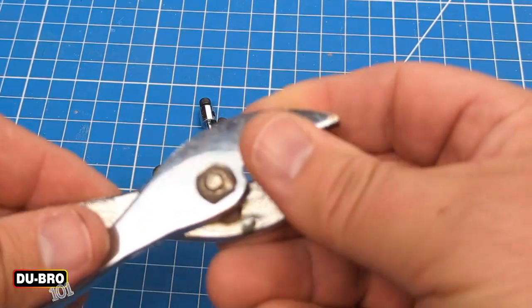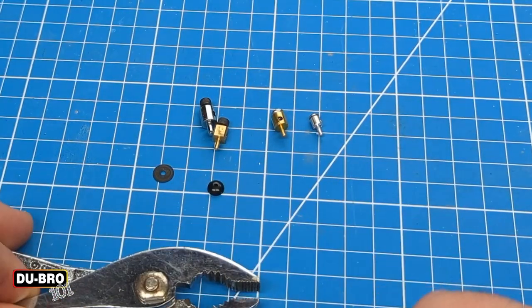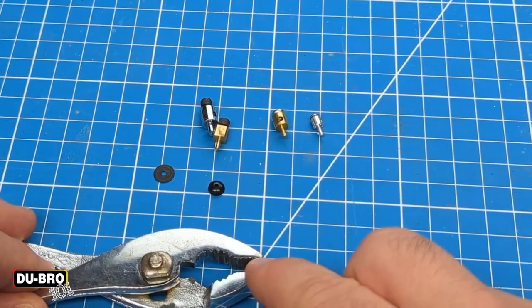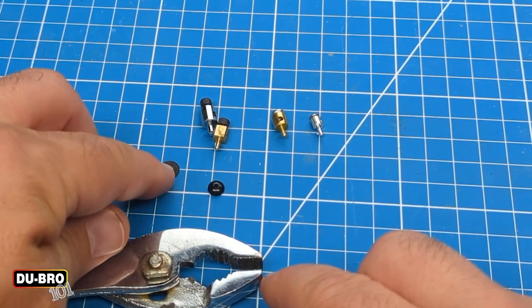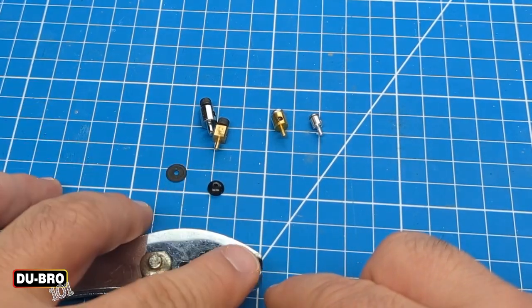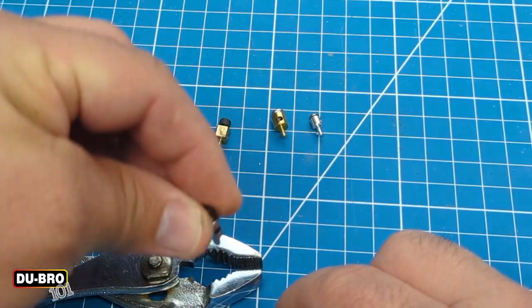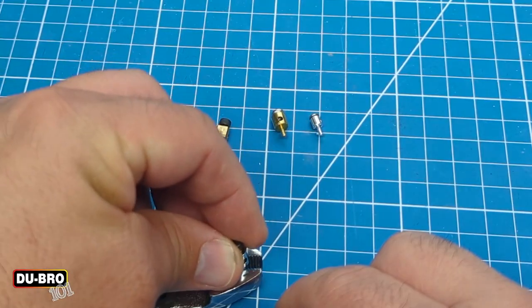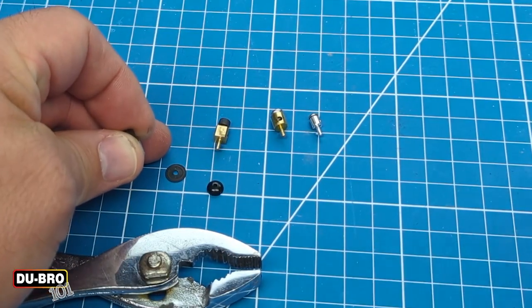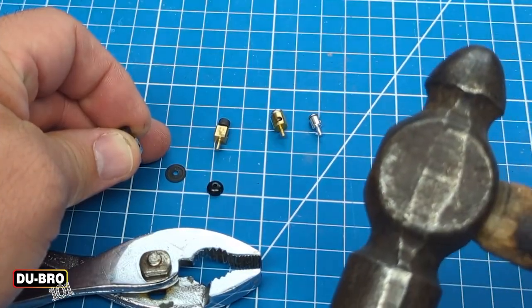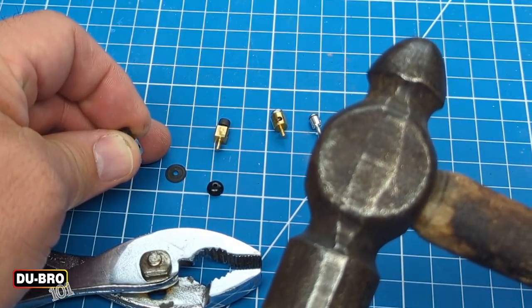To do that, I use some pliers and put the jaws slightly apart from each other. I'll place the push nut on there and then with the assembly, push the EZ connector in through the push nut. Sometimes I'll even have to tap it a little bit with a hammer.